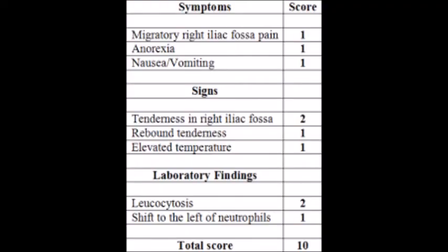Alvarado scoring is highly suggestive for appendicitis. It is a simple and cost-effective scoring system, applicable when specific investigations such as ultrasonography and CT scan are not available. If the score is less than 5, appendicitis is not confirmed. A score of 5–6 is compatible with appendicitis, 6–9 is probable, and a score more than 9 is confirmed appendicitis.